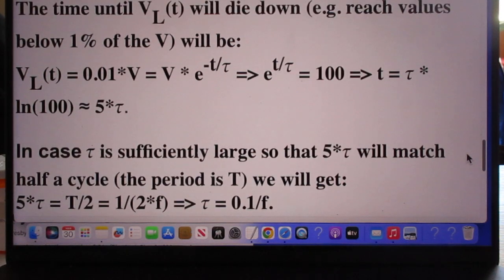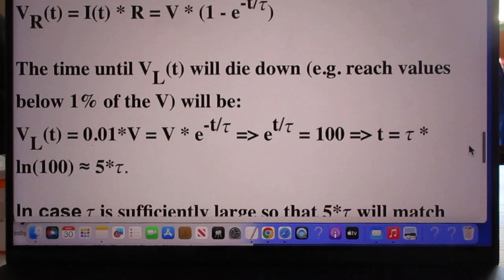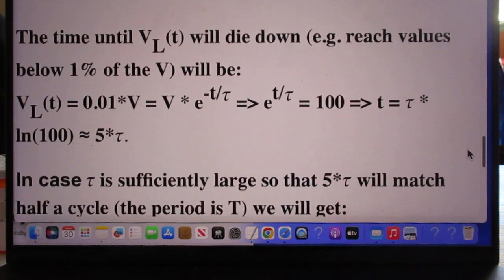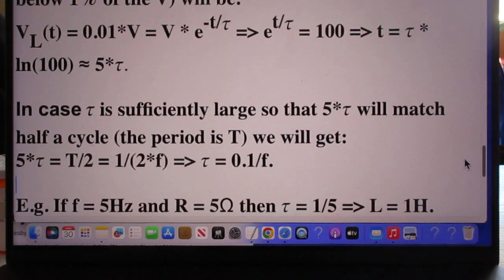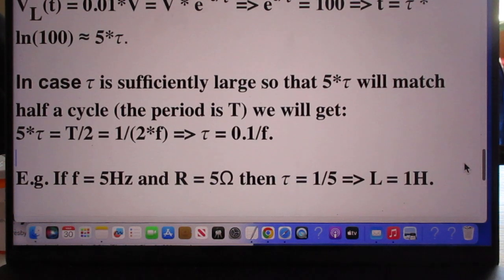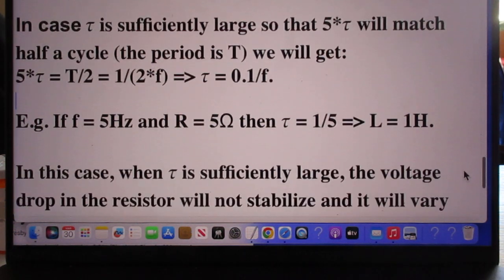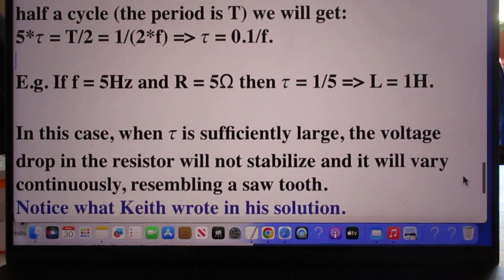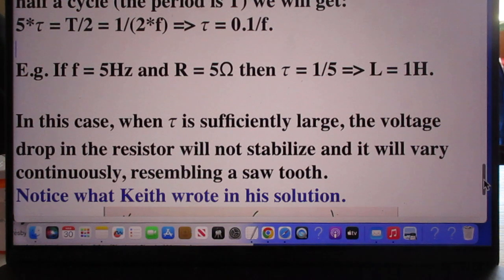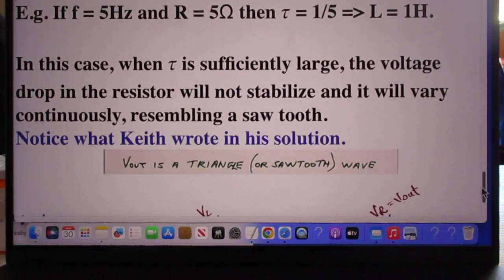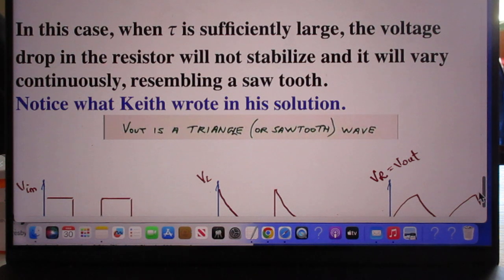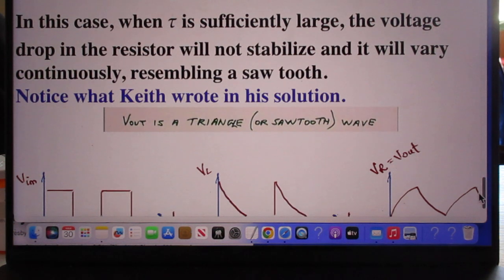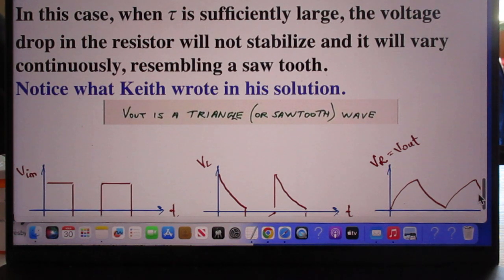So he now makes the V of L 1% of V. So when tau is sufficiently large, the voltage drop in the resistor will not stabilize and it will vary continuously, resembling a sawtooth.